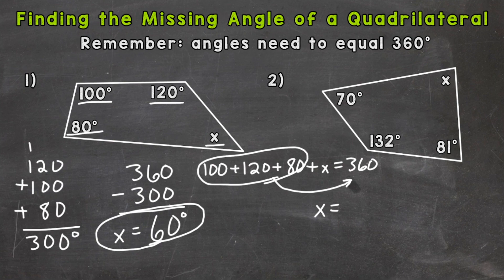So let's take a look at number two and do another example. So our unknown is in the top right, represented by x. So let's take what we do know - the 70, 132, and 81 degrees - add them up, and then subtract from 360.